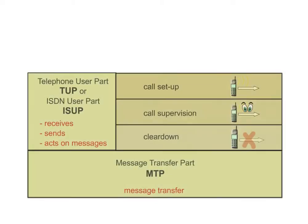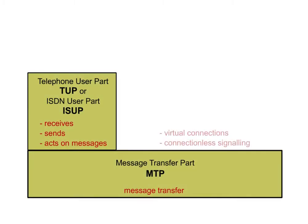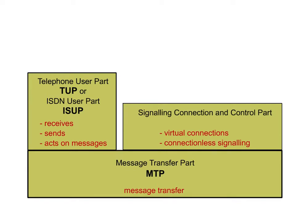To guarantee virtual connections and connectionless signalling — that is, signalling which is not bound to a call — another protocol layer on top of MTP is required, parallel to ISUP. This is the Signalling Connection and Control Part, SCCP.